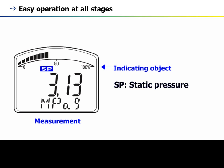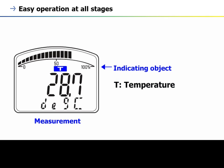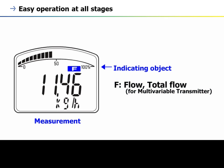SP — static pressure. T — temperature. F — flow.